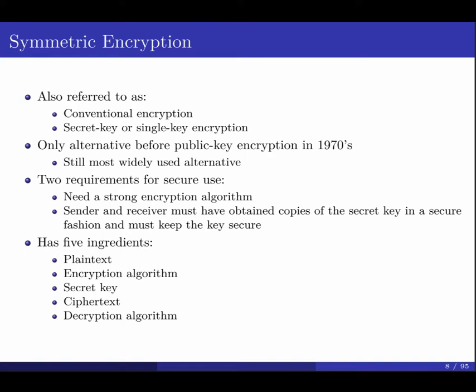Today we start with modern symmetric cryptography, and next lecture we'll talk about public key. For symmetric encryption, we use only one key — the same key for both encryption and decryption. This is also called conventional encryption, secret-key encryption, or single-key encryption. It was the only option before public-key cryptography was developed before 1970, and it's still the most widely used because it's fast.